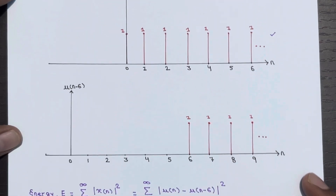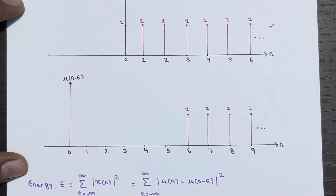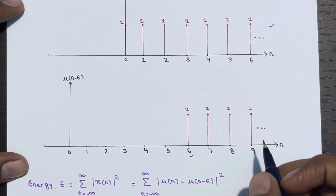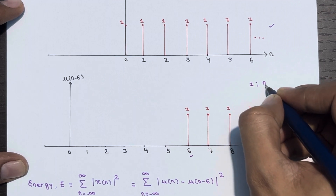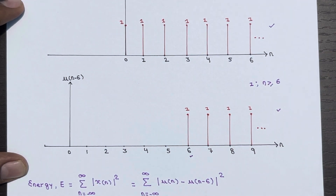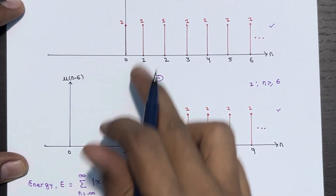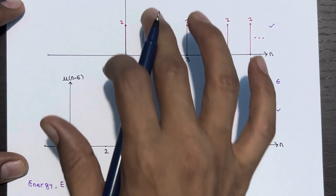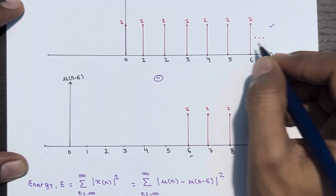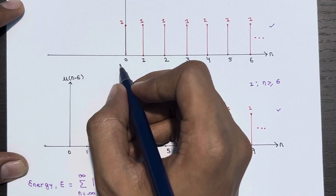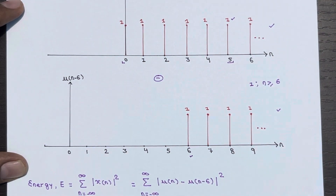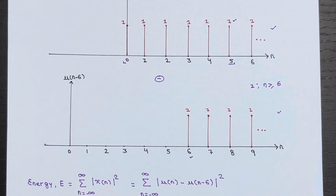Now plot the graph for u of n minus 6. The shift means the signal will start giving some value from n equal to 6 — from there it is defined, giving 1 for n greater than or equal to 6. Our final signal is u of n minus u of n minus 6. When you subtract, starting from n equal to 6 onwards it becomes 0, so the signal is defined from n equal to 0 to 5 with value 1.